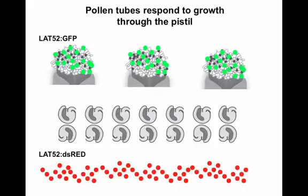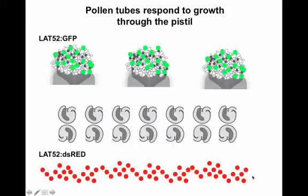This experiment that Alex performed nicely illustrates communication between pollen and pistil. Alex used pollen expressing GFP to pollinate pistils. He then cut these pistils just below the abbreviated Arabidopsis style and placed them on the surface of pollen growth media. Other pollen, only different because it expresses a red fluorescent protein instead of a green fluorescent protein, has been placed directly on the media at the bottom of the dish. Two rows of ovules have been placed in the middle.